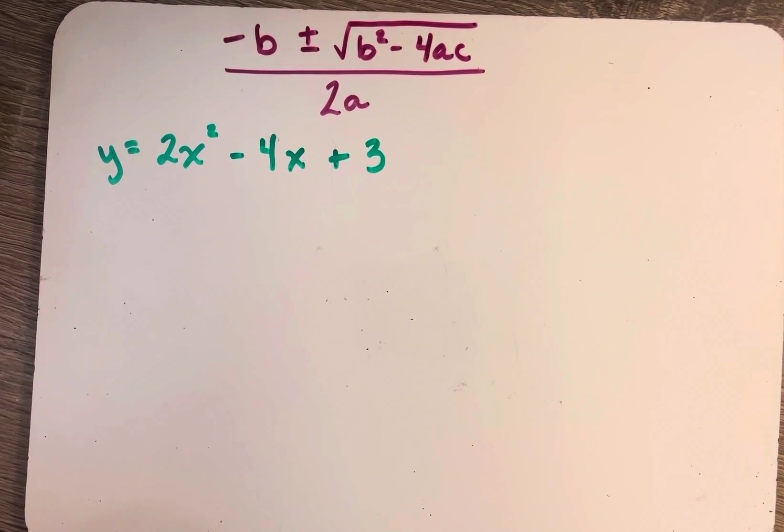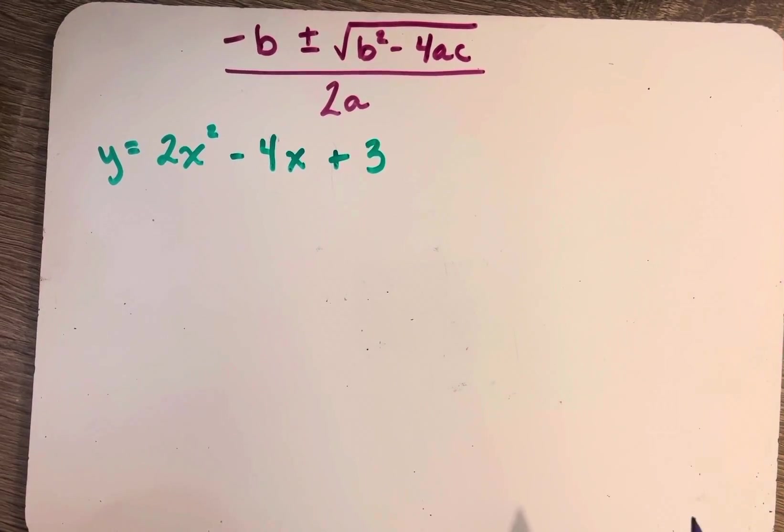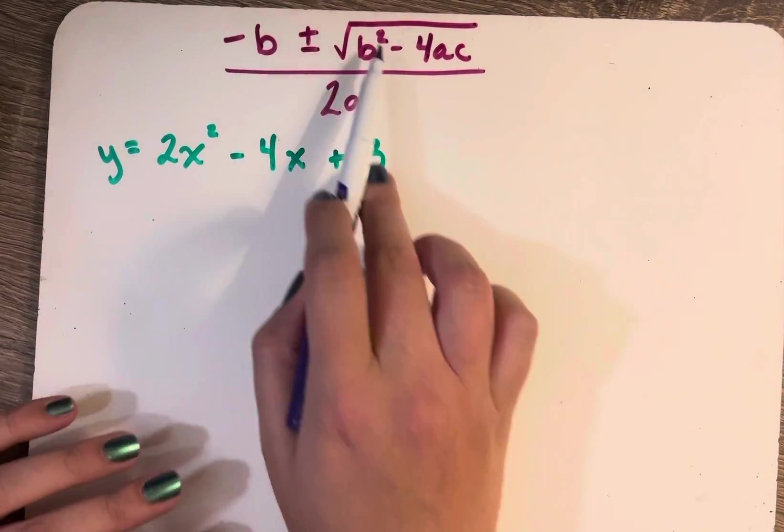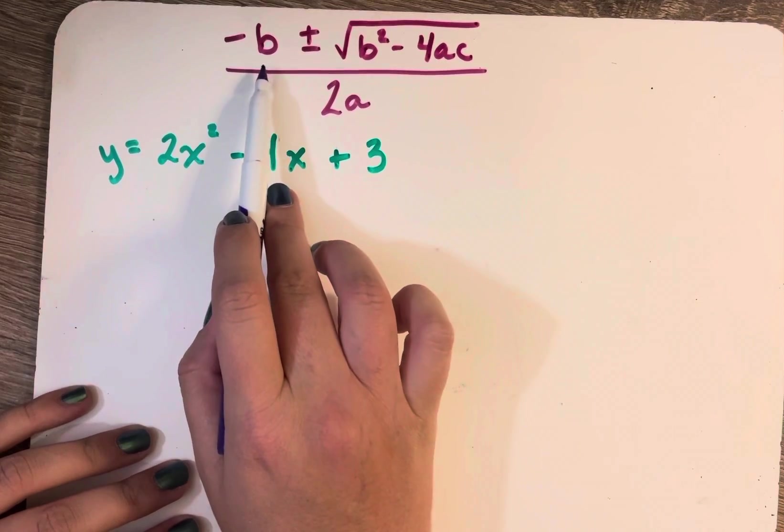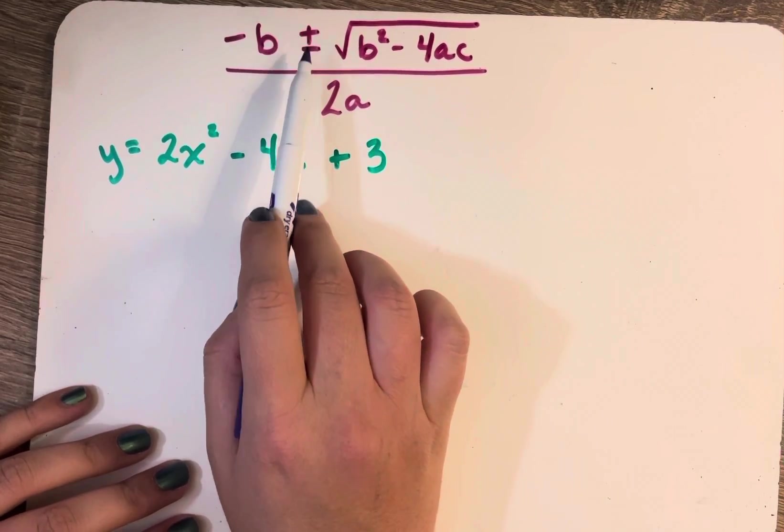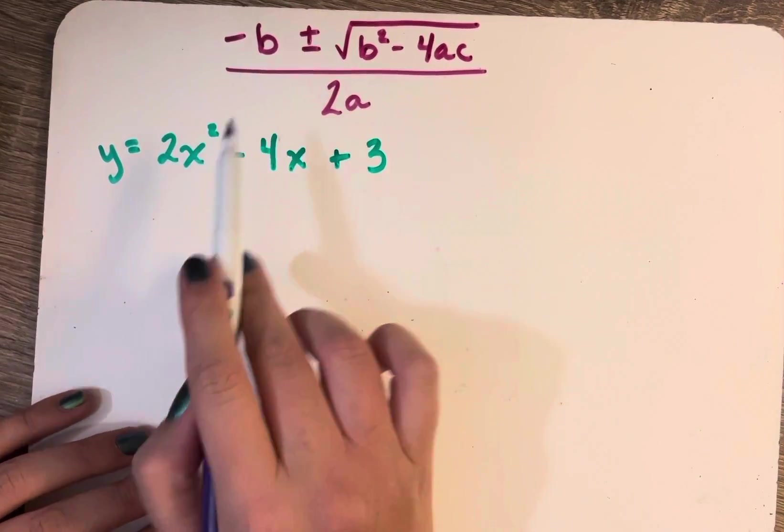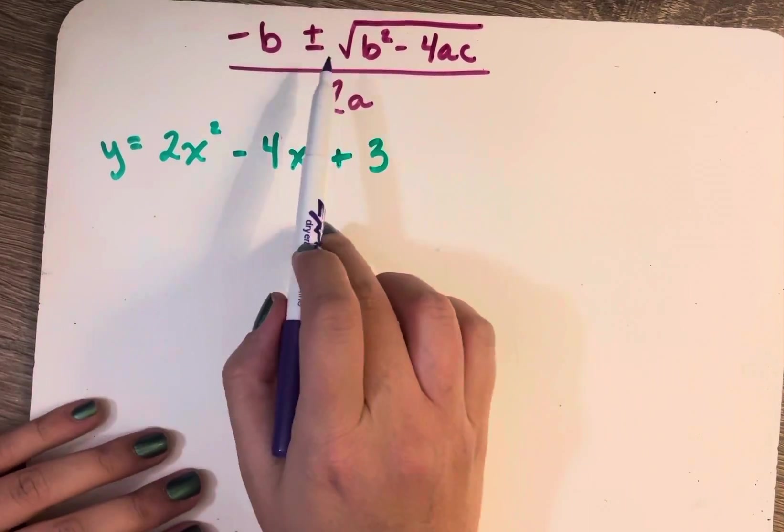So we're going to look at using the quadratic formula in order to determine the roots of a quadratic function. This is the quadratic formula: negative b plus or minus—plus or minus because that's giving us the two possible roots or solutions.